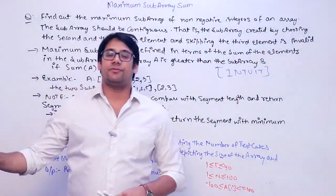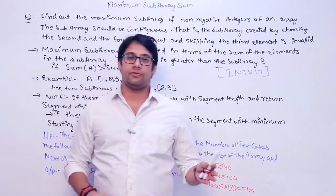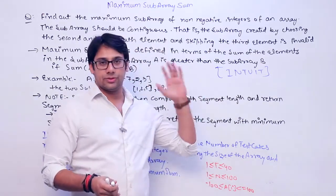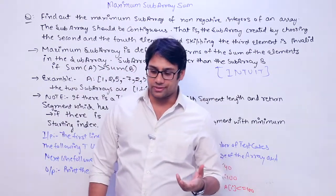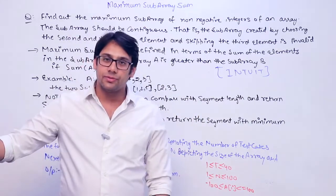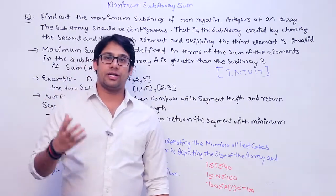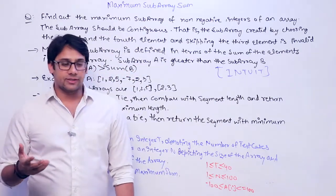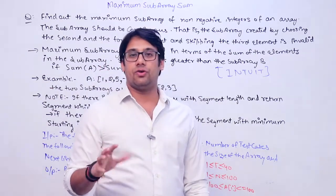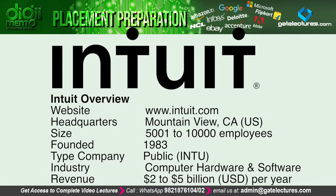The next problem we are discussing is from the company Intuit. From now on, for every video, I'll give a small introduction to the company whose interview problems we are discussing. Intuit is a firm which creates business and accounting software. It is based in Mountain View, California, with an annual turnover of around 5 to 7 billion dollars. It was founded in 1983, which is around 35 years ago.